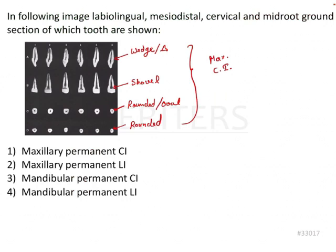Coming back to the question: we have seen the wedge-shaped crown, the shovel-shaped lingual surface, the rounded oval canal, and the sharp mesio-incisal angle with a rounded disto-incisal angle. From all these features, we can confirm that this tooth is the maxillary central incisor. The answer is the maxillary permanent central incisor. Permanent teeth can be easily distinguished from primary teeth by size — permanent teeth are always larger.